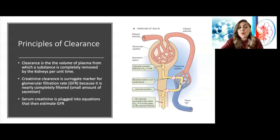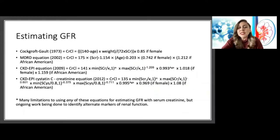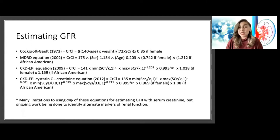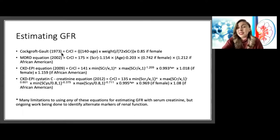What we do instead is estimate the GFR from a serum creatinine. This came about by looking for endogenous substances like creatinine that are completely filtered and almost all excreted, with only a small amount of secretion — essentially what we wanted in order to have a useful, quick measure of GFR.